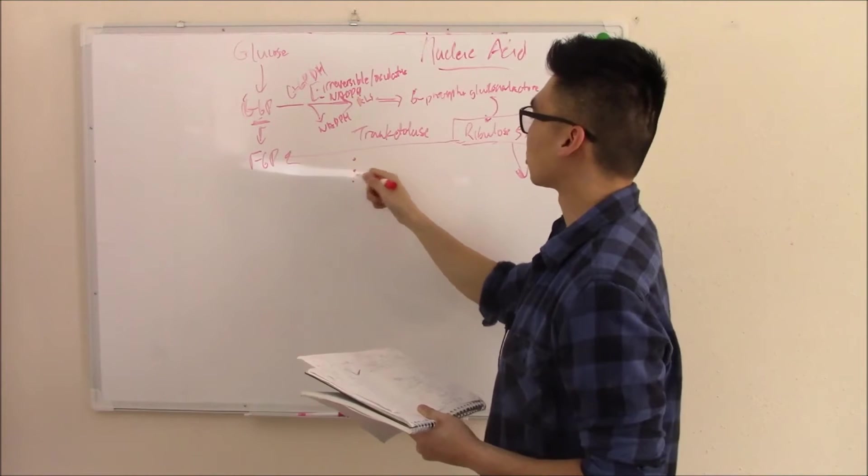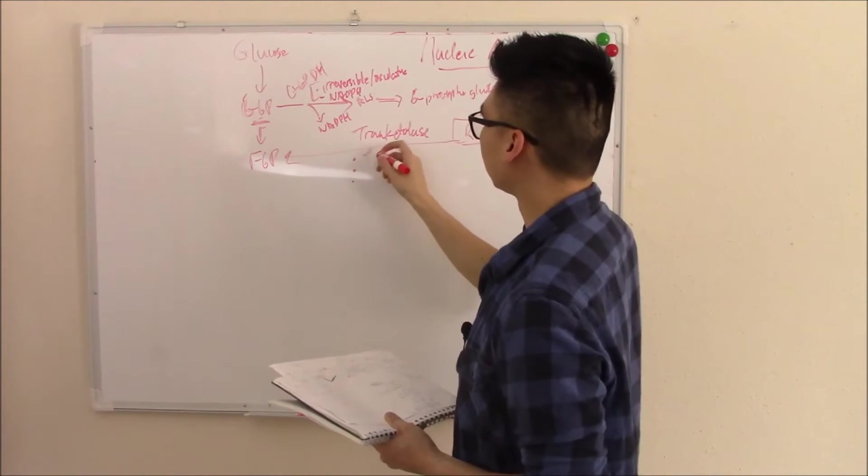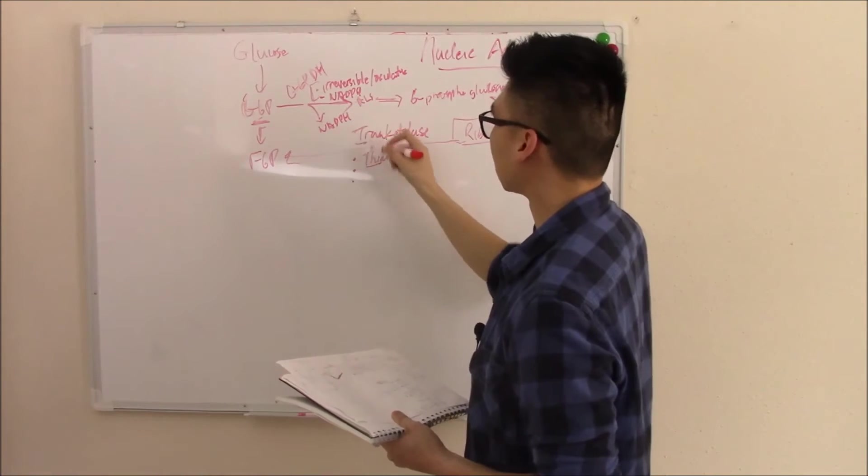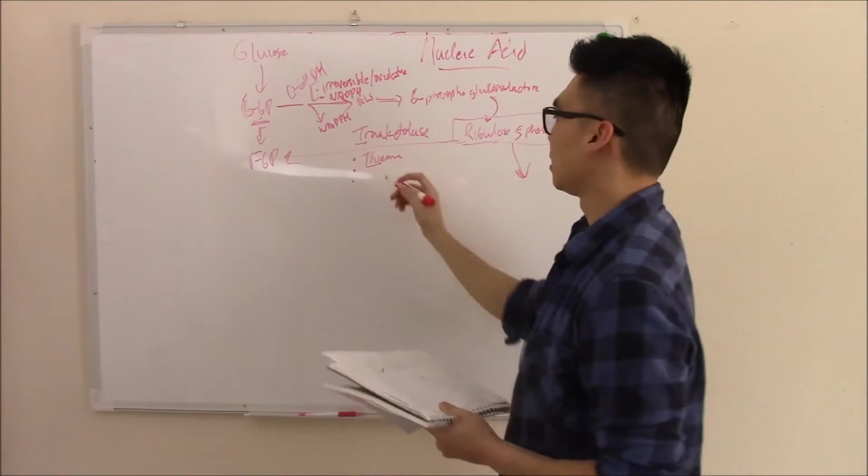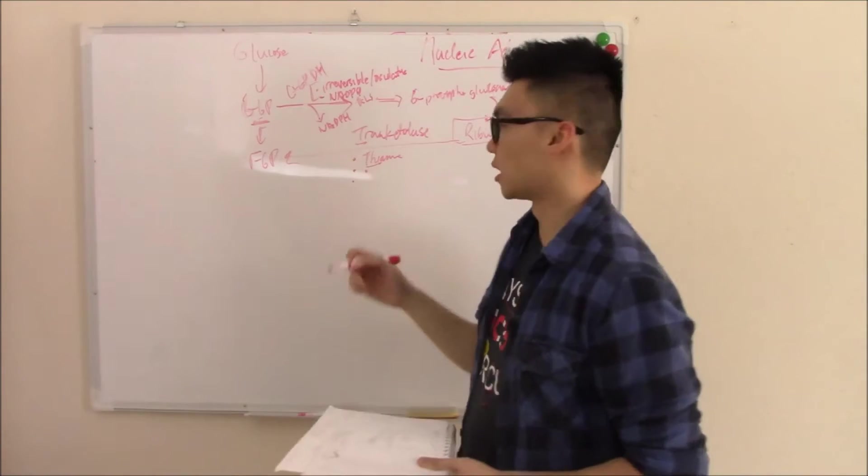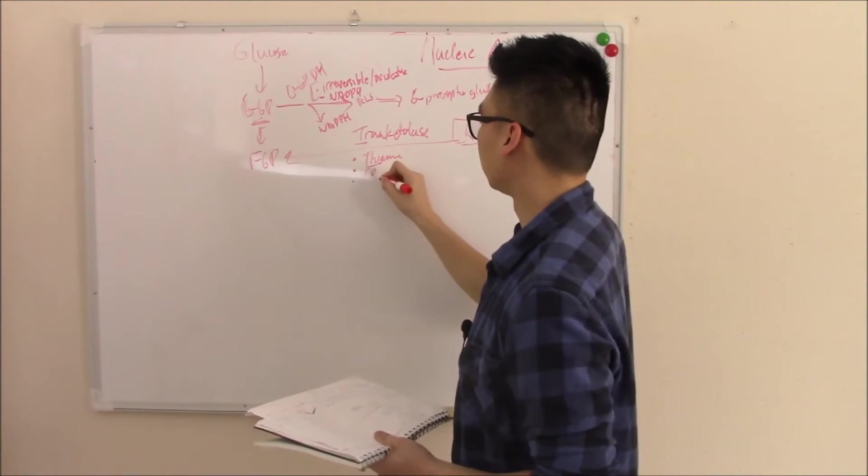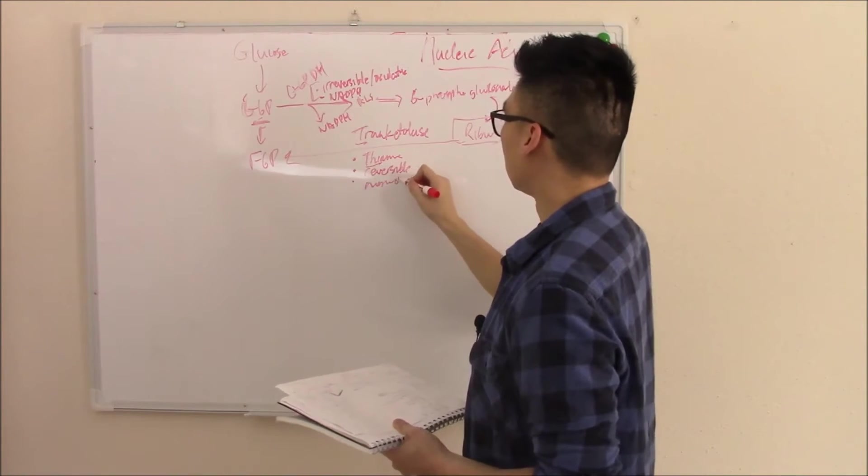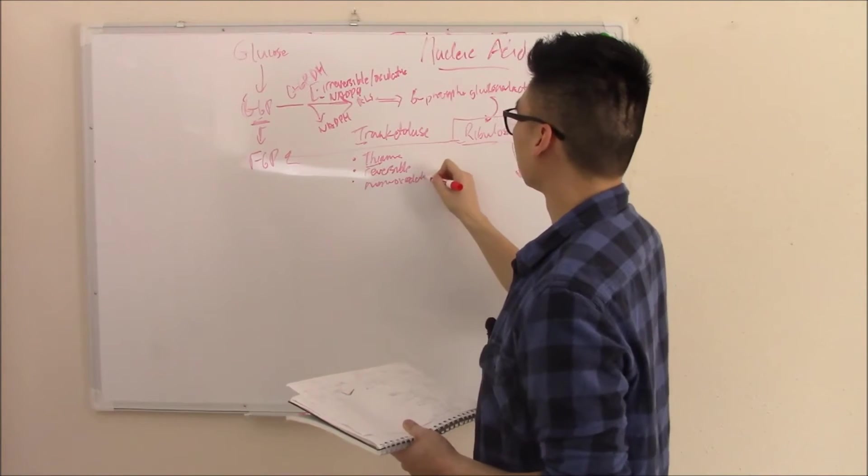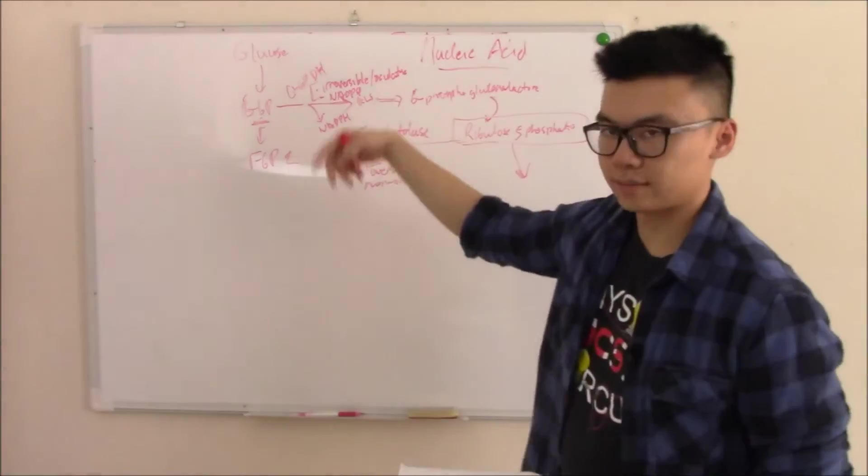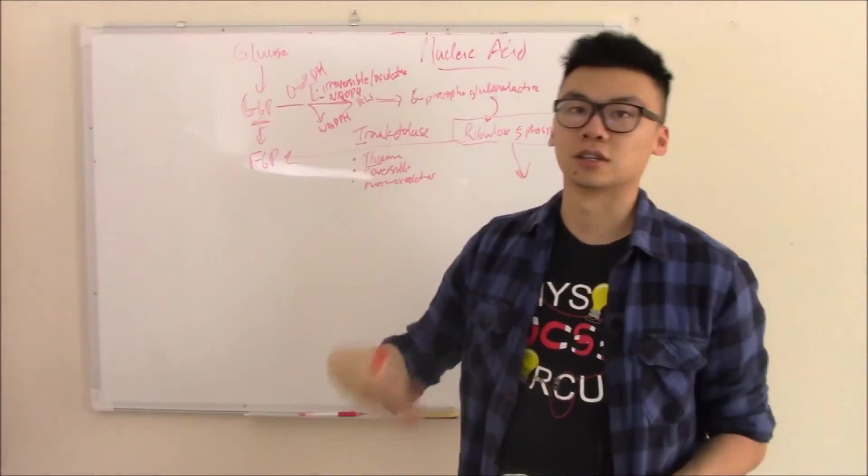A couple facts about transketolase. It needs thiamine, B1. So thiamine, transketolase, both start with T. It is non-oxidative. Electrons aren't exchanged. It is reversible. So reversible and non-oxidative. So if you don't want to make purines and pyrimidines, you can just shunt it back, go to glycolysis, make your sugar, etc.